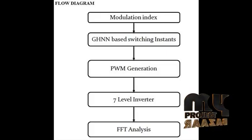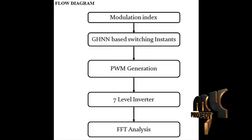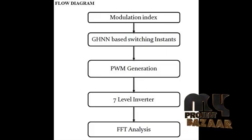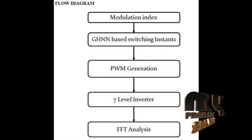The next block is the GHNN-based switching instance. An energy function is formulated using the Fourier series representation, and the rates of change of the energy function with respect to time are calculated and combinedly processed in this block. Using this GHNN network, repetitive iterations are performed to solve the switching instances. For the 7-level inverter, the switching instances correspond to elimination of the 5th, 7th, 11th, and 13th harmonics while keeping the fundamental component at a high value — requiring 5 switching instances. These 5 switching instances are generated and passed to the PWM generation block.